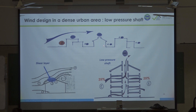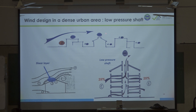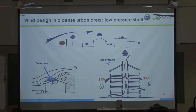If the height of the building is below surrounding buildings, the low pressure shaft won't work. For a multi-story building, you always have to respect 25 percent porosity of openings on each facade, and then you create a low pressure shaft. This is the solution for dense urban areas where using the wind from the street level is not possible.